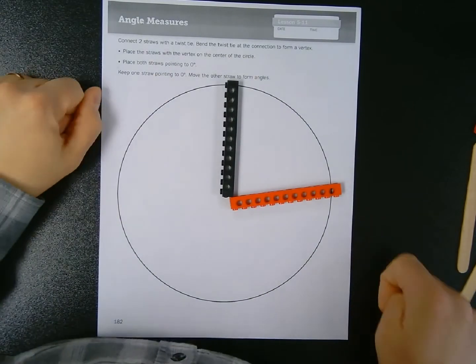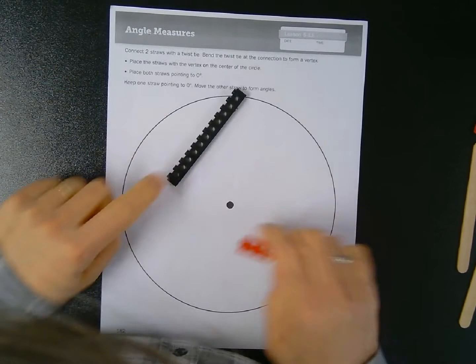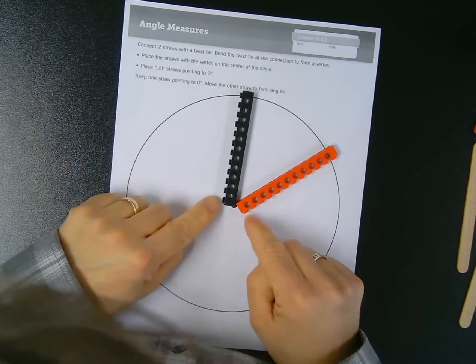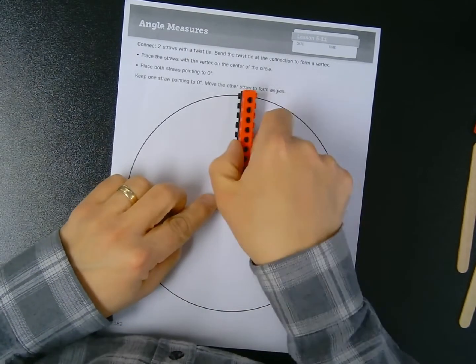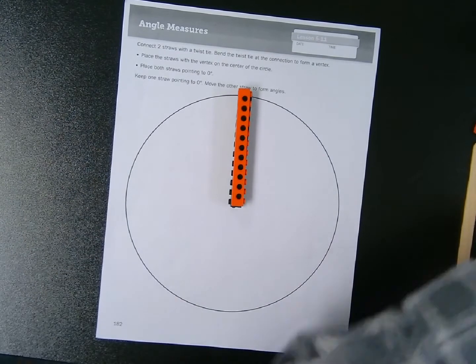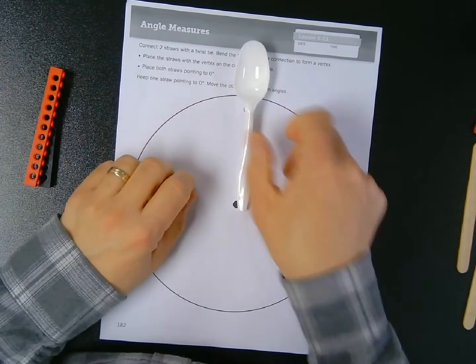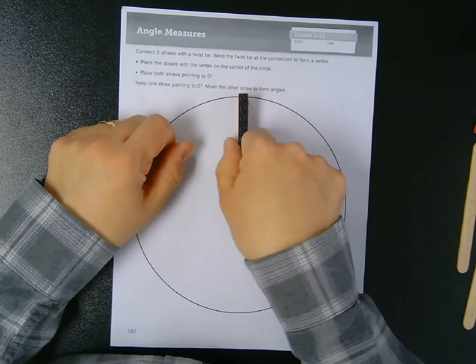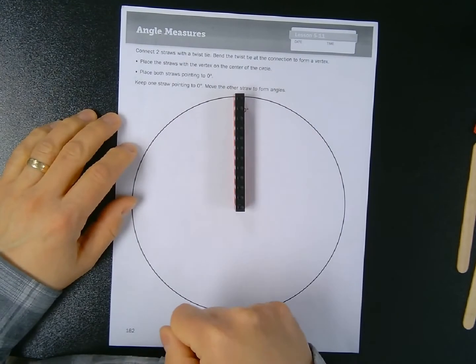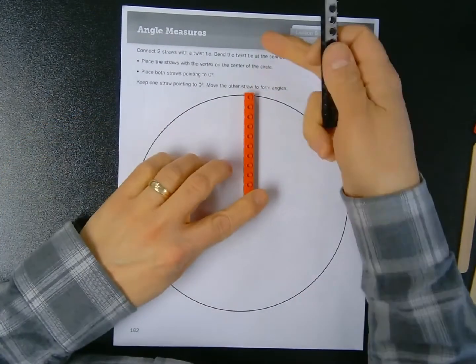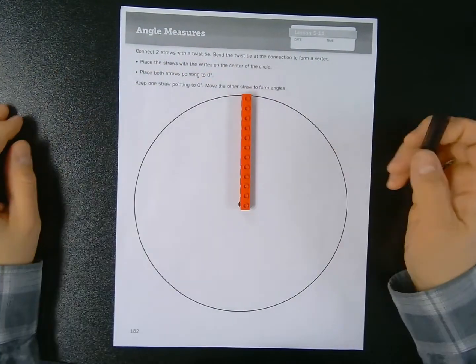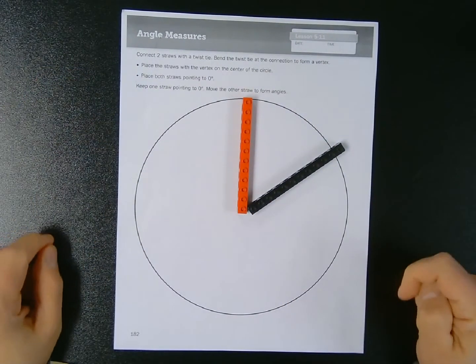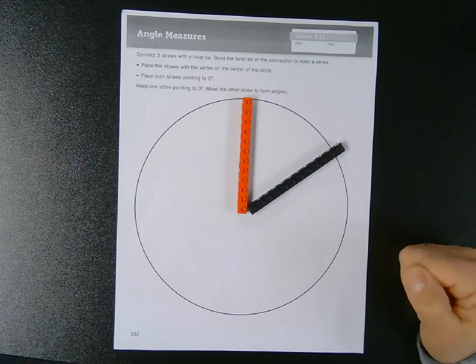Whatever you're using - pencils, markers, whatever straight objects you have - will work. Place the straws with the vertex on the center of the circle. I'm going to put one end of each Lego brick right here touching the center. Place both straws pointing to zero, so I would layer them like that. To make an angle, I'm going to keep one straight object fixed and move the other one, keeping the ends touching that center point.